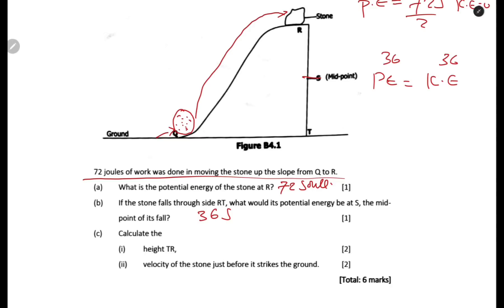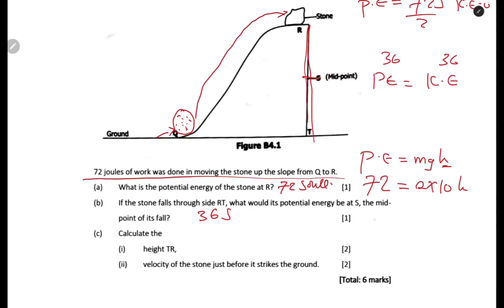Calculate the height of TR. To calculate this height, use the formula: PE = mgh, since we have potential energy. So 72 = 2 × 10 × H, which gives 72 = 20H. Therefore H = 72 ÷ 20 = 3.6 meters. That is the answer.